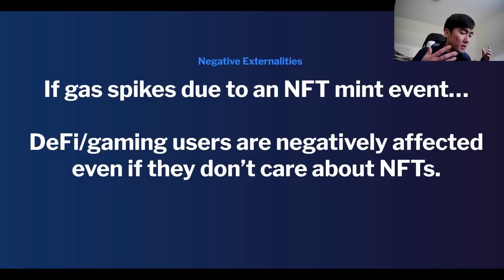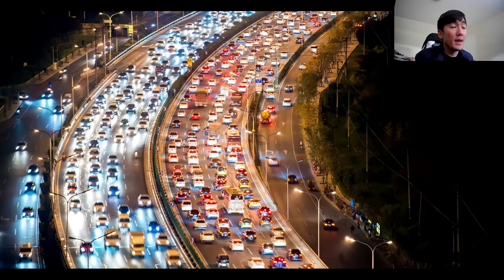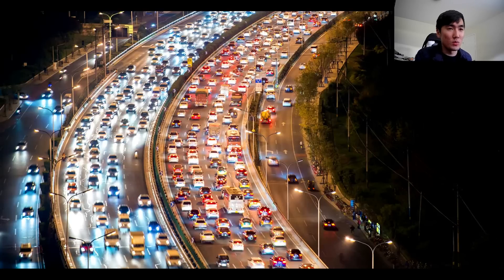You can kind of see the problems with the concept of 'one blockchain to rule them all' — maybe it doesn't make any sense. Maybe each mainstream application or use case should have their own blockchain, and we can have a bunch of different blockchains that communicate with one another. You can think of this like roads — if there's a Kanye concert in LA, everyone's trying to go, roads are congested, but I'm just trying to go to Safeway to buy groceries. It doesn't make sense. What if we can design blockchains better than roads that can only accommodate a certain number of people?